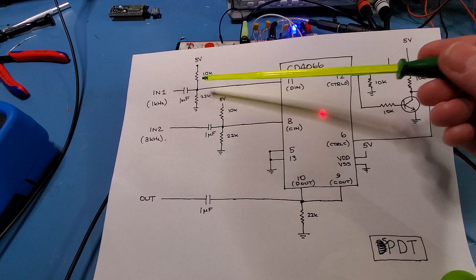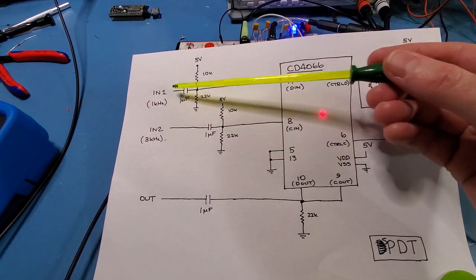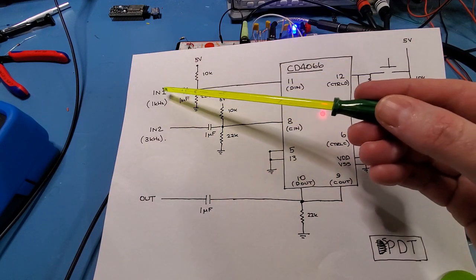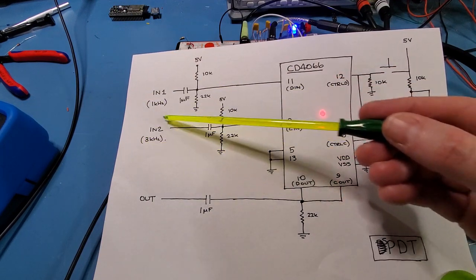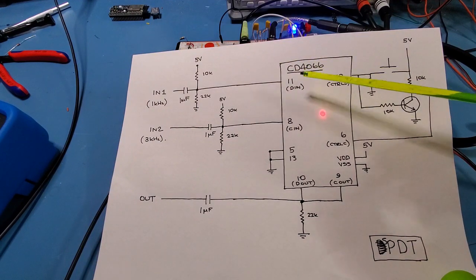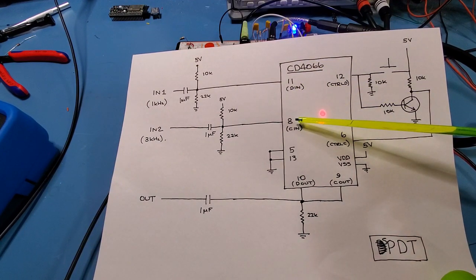So just to describe the circuit it's kind of similar to the last one but now I've got two input lines coming in mid-rail biased. Just the test setup here is input one is one kilohertz input two is three kilohertz and they go into pin 11 D in and pin 8 C in respectively.